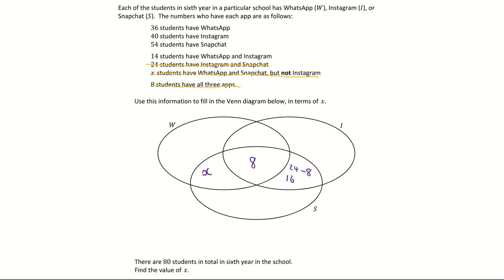So that's the 24 dealt with. Cross it off my list. I'm now moving up to the 14 students. 14 students have WhatsApp and Instagram. So that would be this region here which is highlighted in green. Once again eight of them are already included. So when I'm filling in my 14 here I need to subtract the eight which brings me down to six students who have WhatsApp and Instagram only.